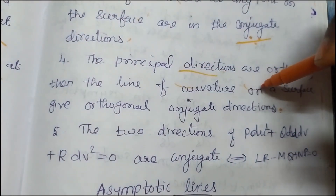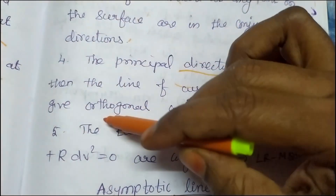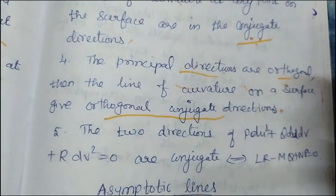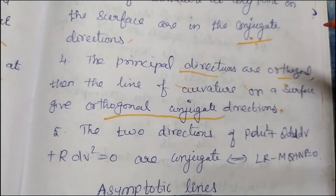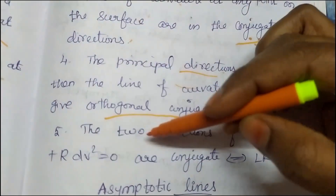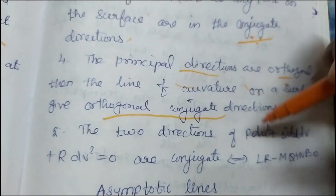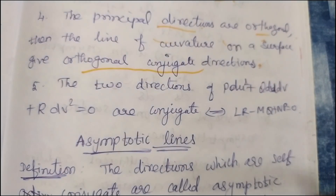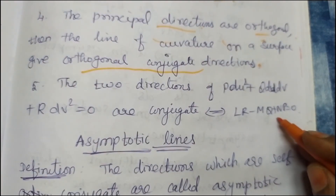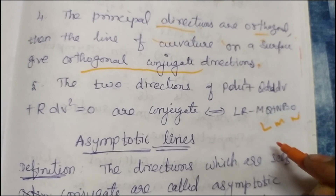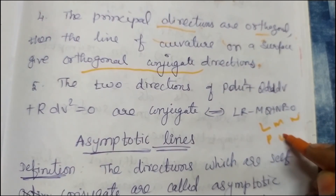Line of curvature: F equal to 0 and M equal to 0. Then orthogonal conjugate direction. Two directions p du squared plus q du dv plus r dv squared equal to 0 are conjugate if and only if one condition holds.